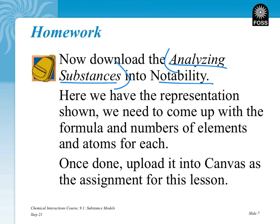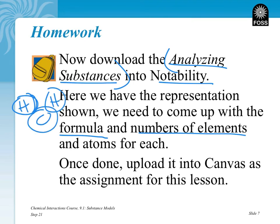In this worksheet, a representation will already be shown for you — the dots and circles will already be there. You need to come up with the formula and the numbers of each element for that atom. So if I have the representation of two H's and one O for oxygen, my formula is H2O. Any numbers you'll see will typically be written after the element symbol. That tells you there are two H's and only one O. You'll be filling out that Analyzing Substances sheet.